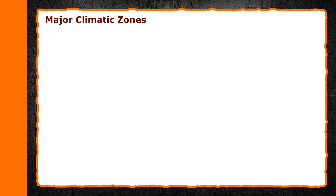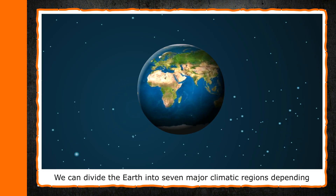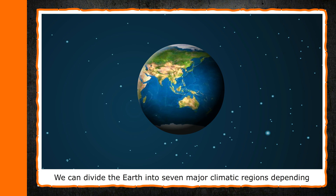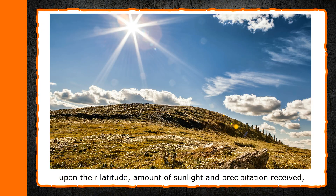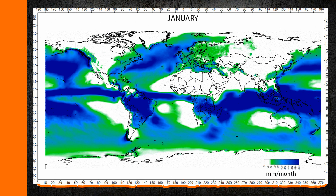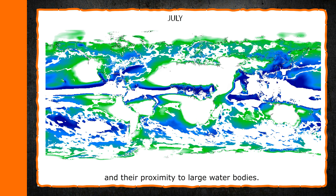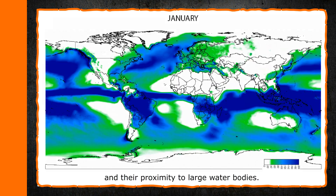We can divide the earth into 7 major climatic regions depending upon their latitude, amount of sunlight and precipitation received, and their proximity to large water bodies.